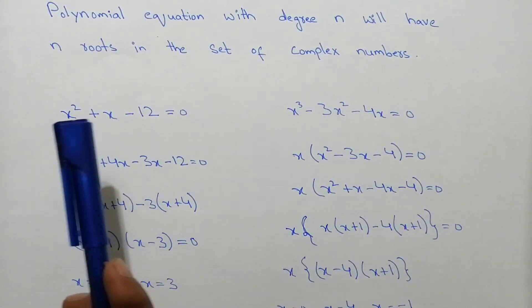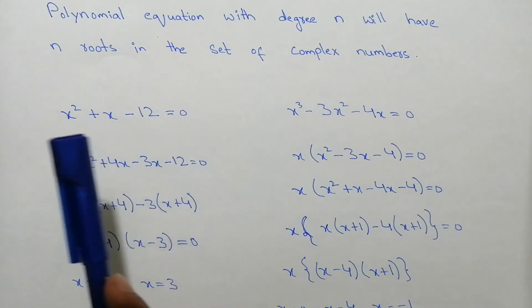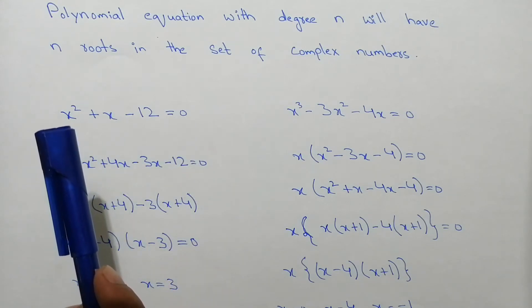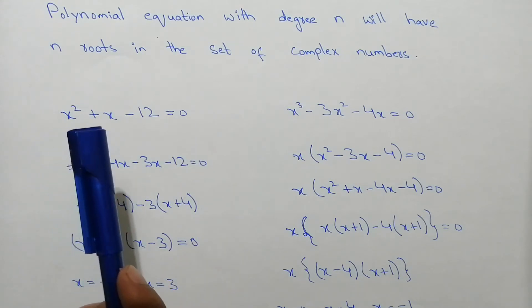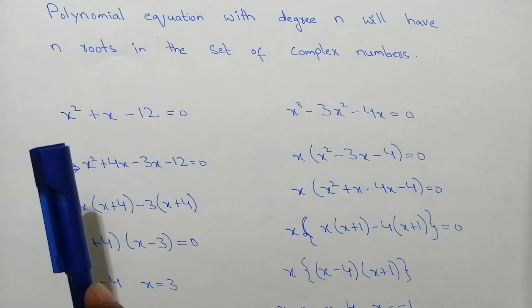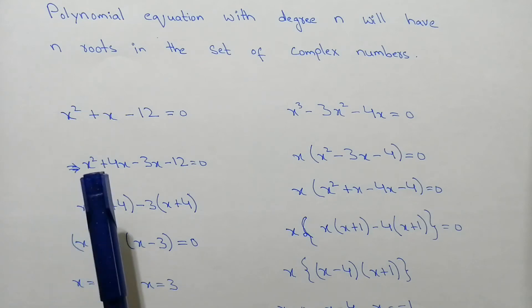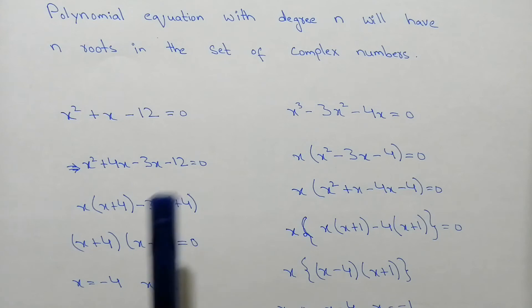Now this is the polynomial equation. Let's suppose this is the polynomial equation with x square plus x minus 12. Now if we apply the factorization method and we break the middle term, so x square plus 4x minus 3x minus 12.